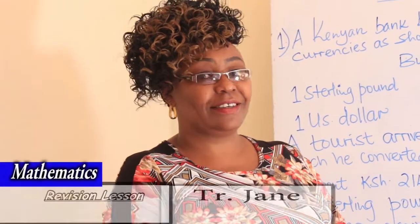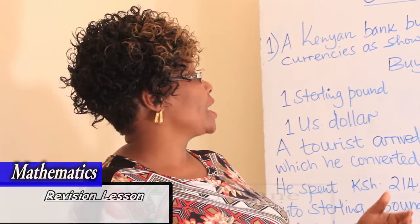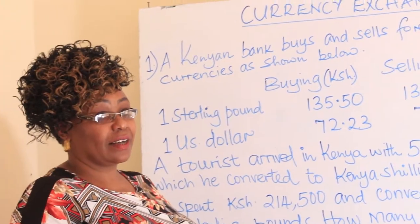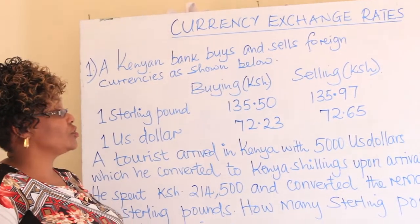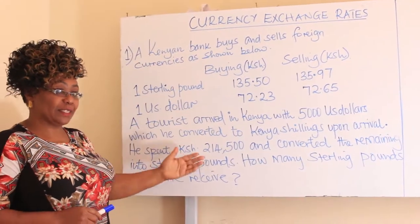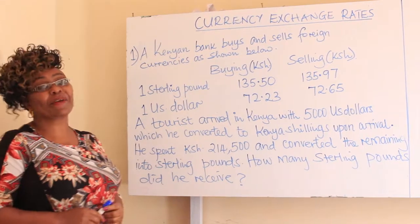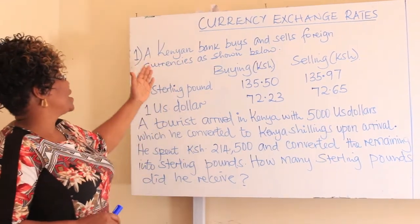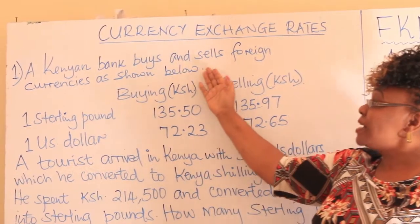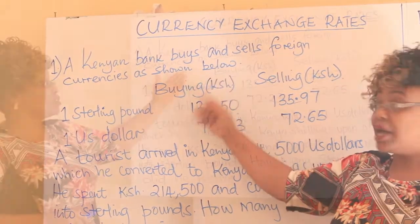Welcome learners to Form One Mathematics. We are looking at what we call currency exchange rates. They are normally tested in exams. Let us go through this one and then you go and practice. Number one: a Kenyan bank buys and sells foreign currency as shown below.